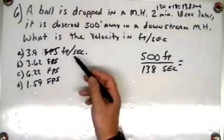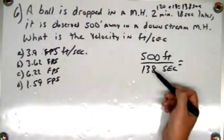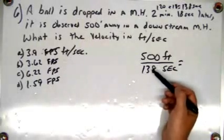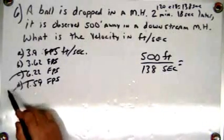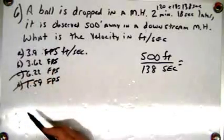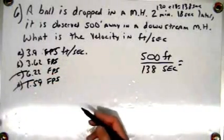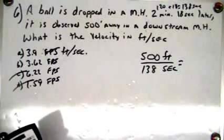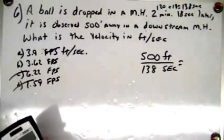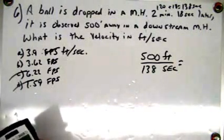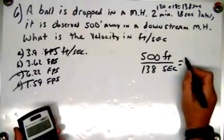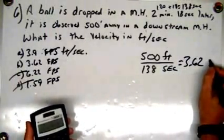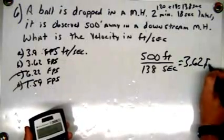500 feet divided by 138 seconds is going to be less than 4 but more than 3, so it's not going to be C or D — it's going to be one of these two. I'm taking a guess at B. So 500 divided by 138 gives me 3.62 feet per second.